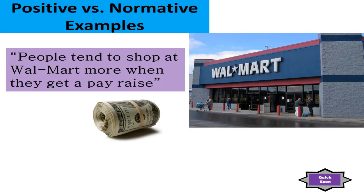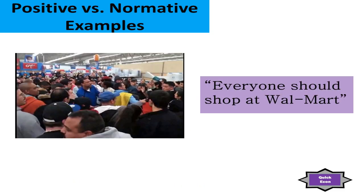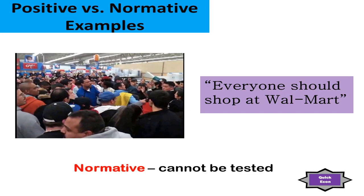Now the easiest way to learn about positive versus normative is to just look at a couple of examples. Examine the following statement: on average, people tend to shop at Walmart more after they get a pay raise. You might look at that and say that's probably false, and maybe it is, but it's still a positive statement. We can look at people's income data and shopping data to see if the statement is true or false. Now the following statement — everyone should shop at Walmart — that's a normative statement. We cannot test that with data. You see the word should; that's an opinion. We can't prove that true or false.